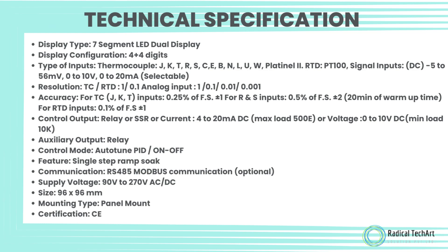Resolution: TC and RTD — 1 or 0.1; analog input — 1/0.1/0.01/0.001. Accuracy: for TC J, K, T inputs — 0.25% of FS ±1; for R and S inputs — 0.5% of FS ±2 with 20 minutes warm-up time; for RTD inputs — 0.1% of FS ±1. Control output: Relay, SSR, or Current 4 to 20 mA DC, max load 500Ω; or Voltage 0 to 10 V DC, min load 10KΩ.